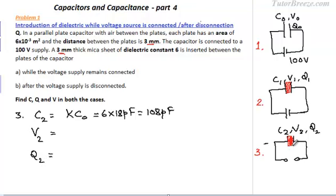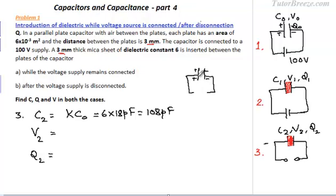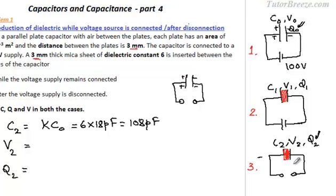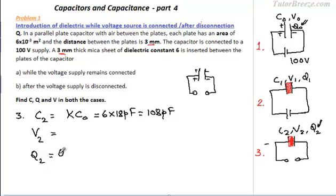When you first charge the capacitor, there is some charge on the plates. Now if the voltage supply is disconnected and then you remove the power supply, the charges on the plates have no way of moving out — they are locked. Because this is a conductor, and once isolated the charge cannot move from one conductor to the next; it cannot flow out. So the charges are locked and don't change. Therefore Q2 equals Q0, because the charges are unable to leave the plates once the power supply is disconnected.